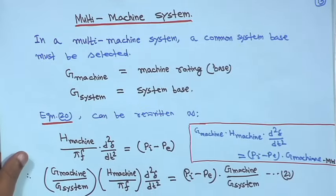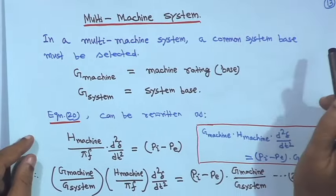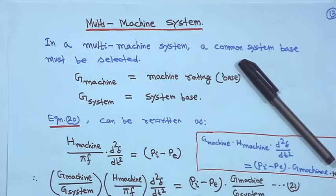Now let us come to the multimachine system. Multimachine system transient stability we will not study in this class — that is basically for postgraduate students — because one has to follow iterative techniques. The reason for writing multimachine system here is that we want to find out the equivalent inertia constant H_eq. We will not study the transient stability analysis of multimachine systems.